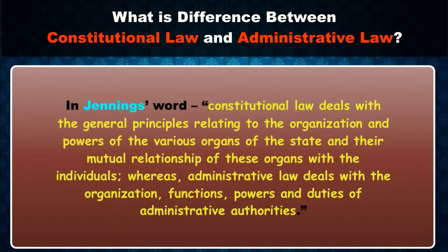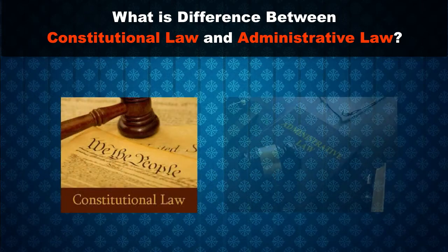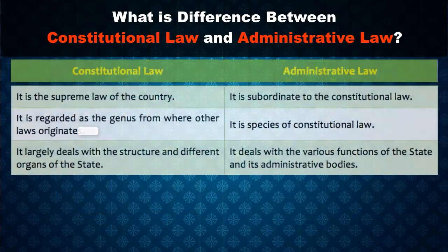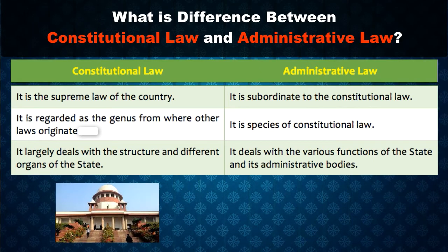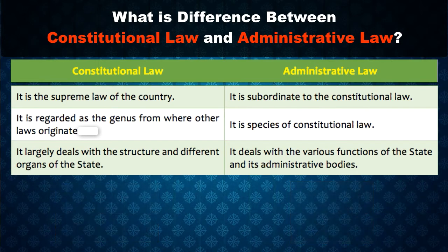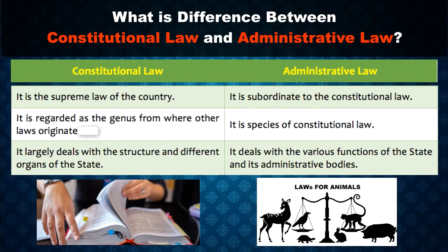The following table illustrates the major differences between constitutional law and administrative law. Constitutional law is the supreme law of the country, whereas administrative law is subordinate to constitutional law. Secondly, constitutional law is regarded as the genus from which other laws originate, whereas administrative law is a species of constitutional law.